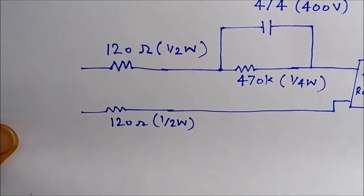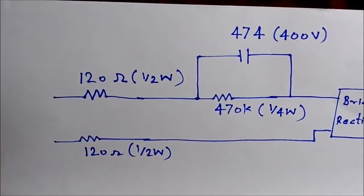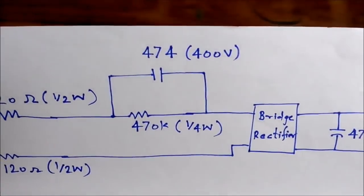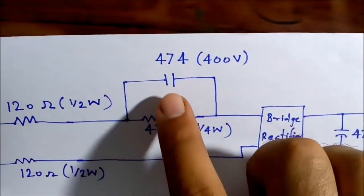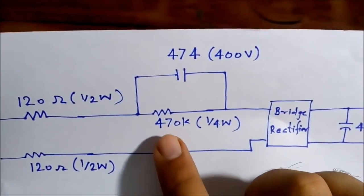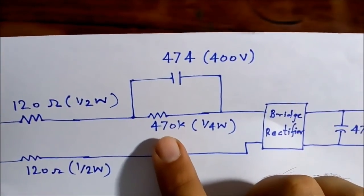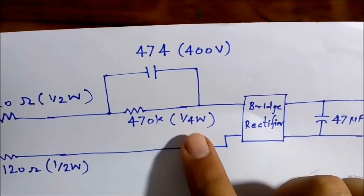So there are two 120 ohm resistors, both of them are half watt. There is a 474, 400 volt capacitor. This is a non-polarized capacitor. And this is a 470 kilo ohm resistor which is 1 by 4 watt.